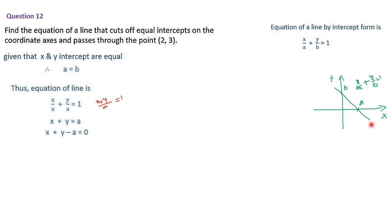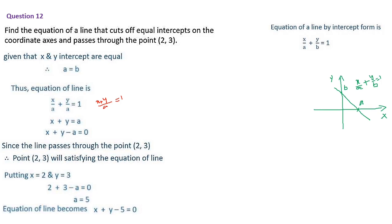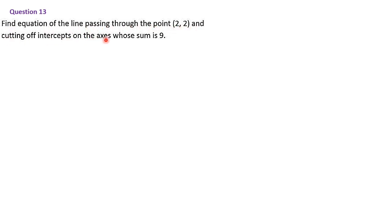Next, question number 13: Find the equation of the line passing through (2,2) and cutting intercepts on the axes whose sum is 9. Here a + b = 9, so b = 9 − a. Substituting into the intercept form: x/a + y/(9−a) = 1. Since the line passes through (2,2), substituting x=2, y=2 and taking LCM a(9−a): 2(9−a) + 2a = a(9−a).